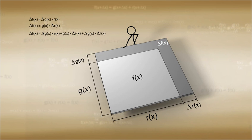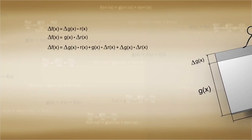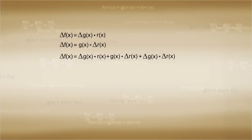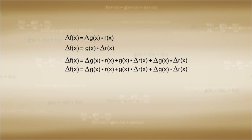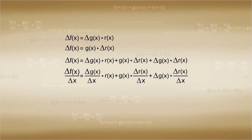For this reason, we divide both sides by Δx. And we get Δf(x) over Δx is equal to Δg(x) over Δx times r(x) plus g(x) times Δr(x) over Δx.